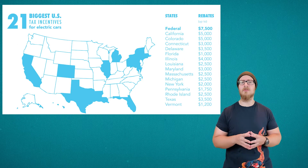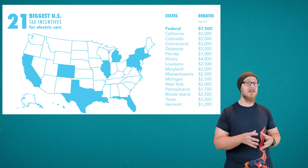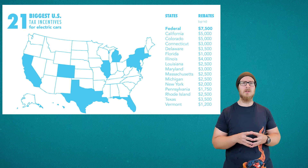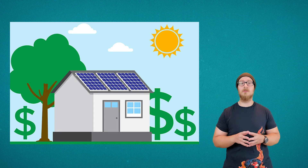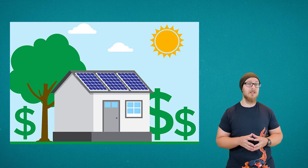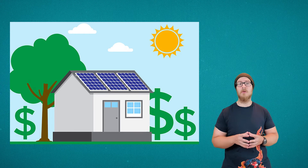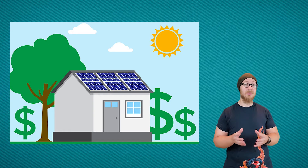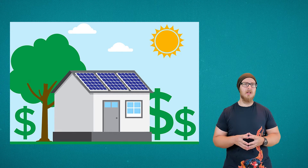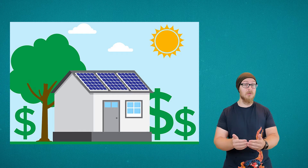Cities can also reduce the amount of pollution from cars by expanding public transit systems — the fewer people driving, the better. Incentivizing the purchase of battery electric vehicles and hybrids by offering tax credits is also an option. The United States offers a federal tax credit for the installation of solar panels, which can lower tax rates for homeowners, save money on electricity, and in particularly efficient areas you can actually sell electricity back into the grid.